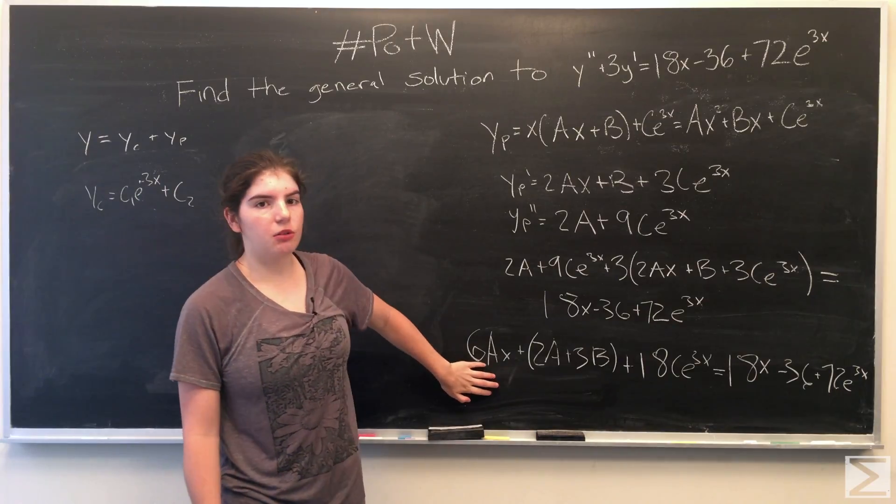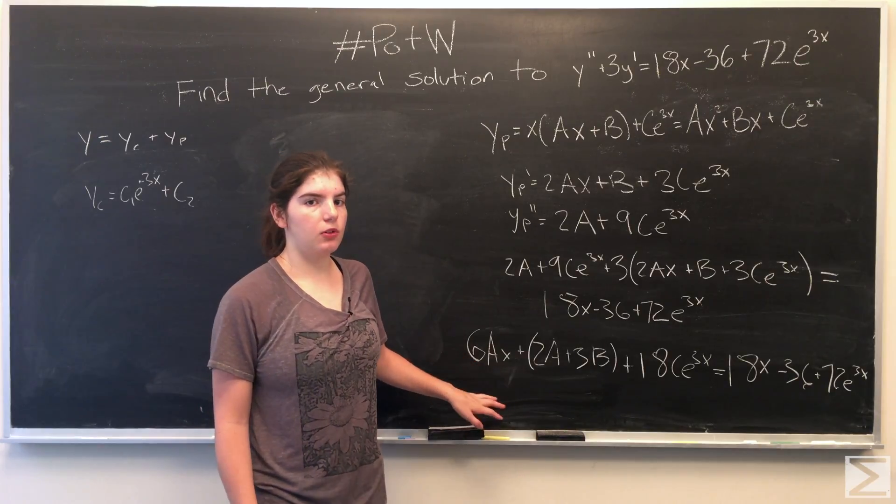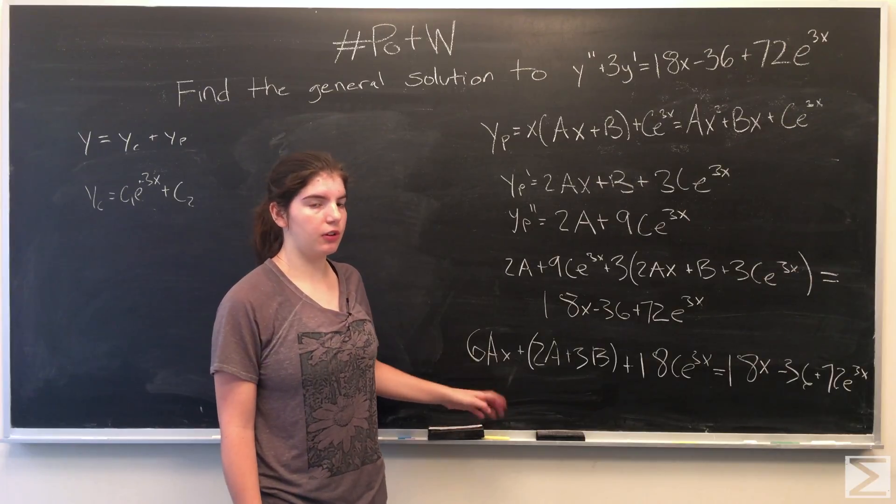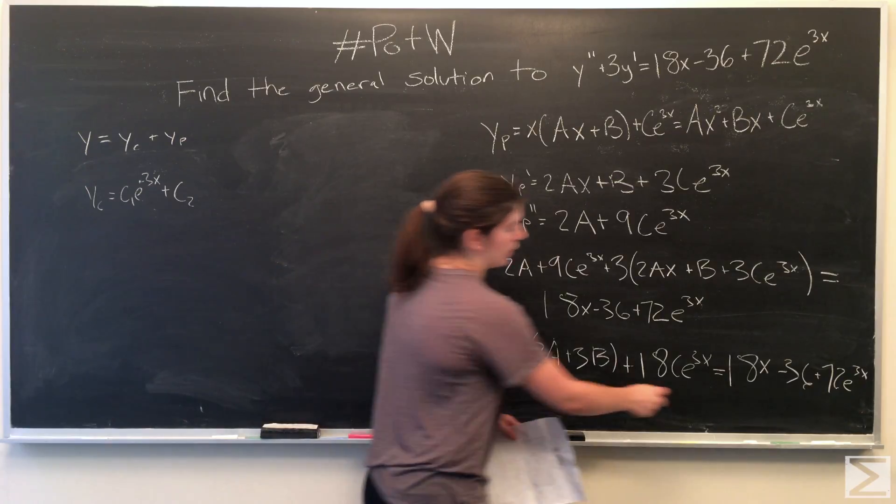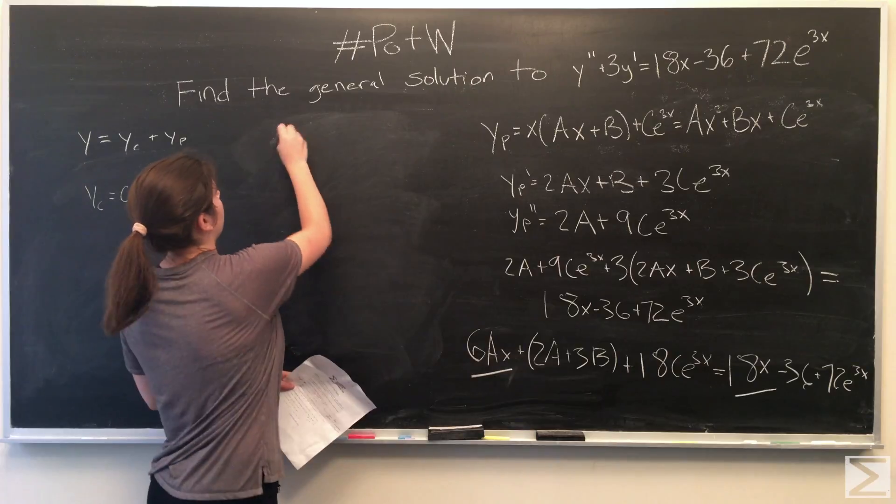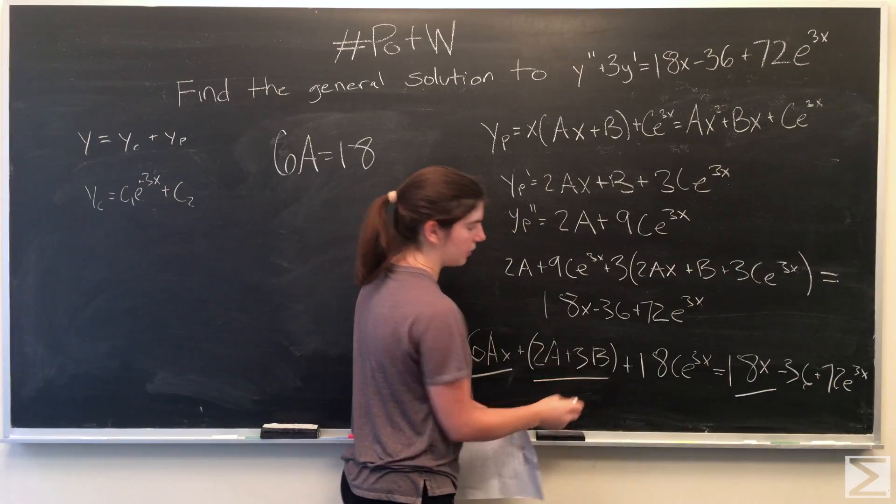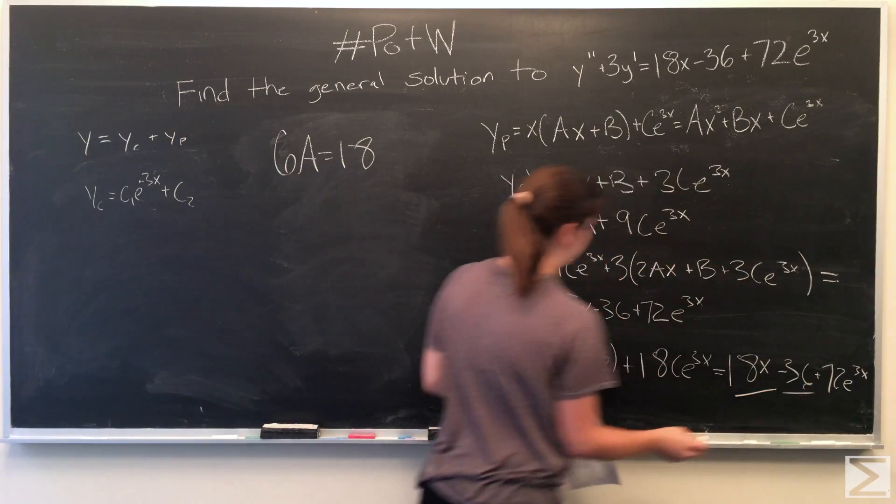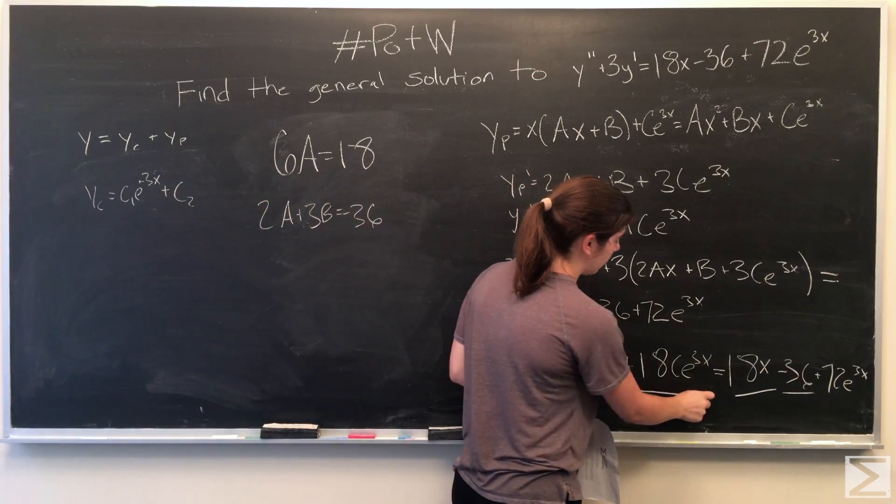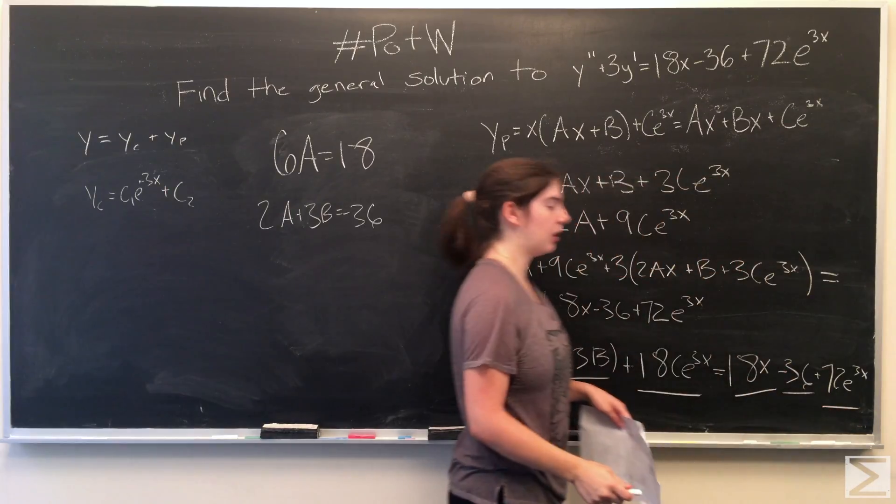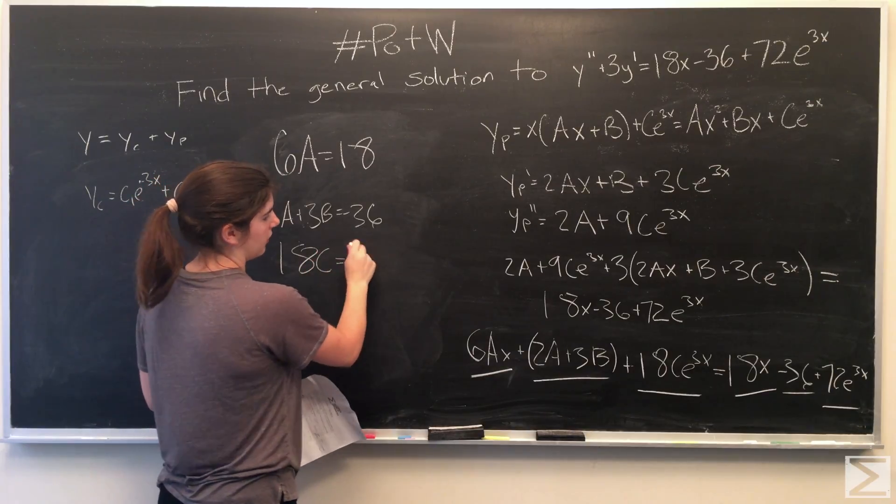And then down here we combine like terms. Now we want to find the coefficients a, b, and c, and we're going to equate the coefficients of like terms on each side. For example, we have 6ax on this side and 18x here, so 6a equals 18. We have 2a plus 3b and negative 36. And then we have 18ce to the 3x and 72e to the 3x. Therefore, 18c equals 72.